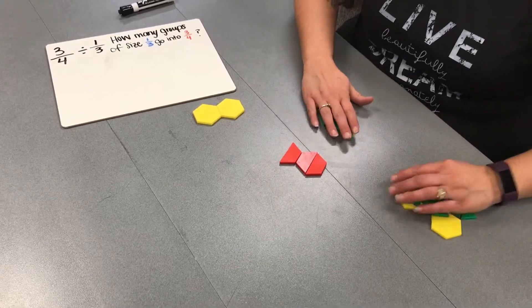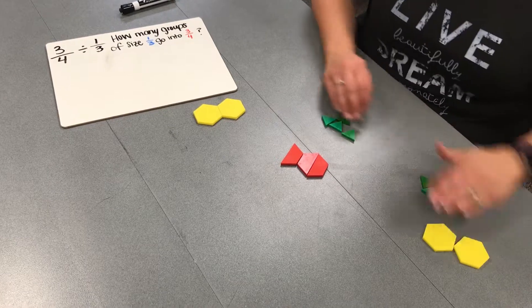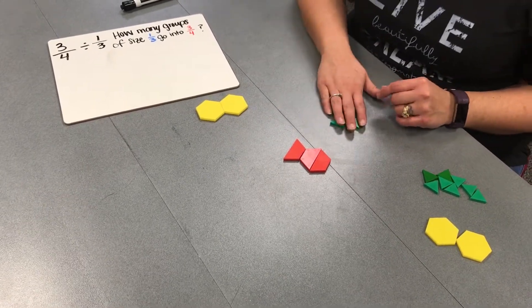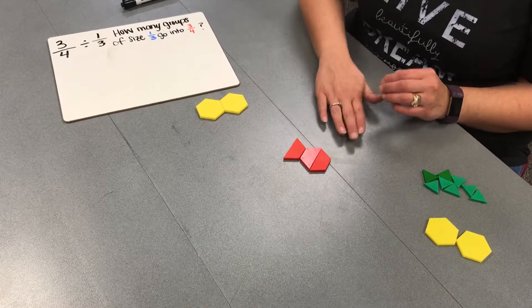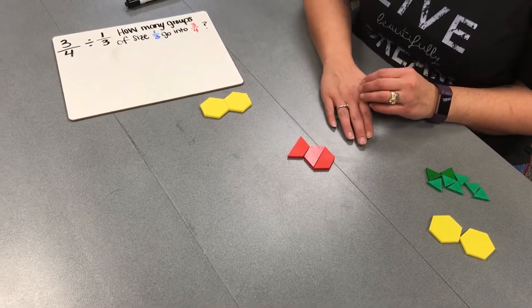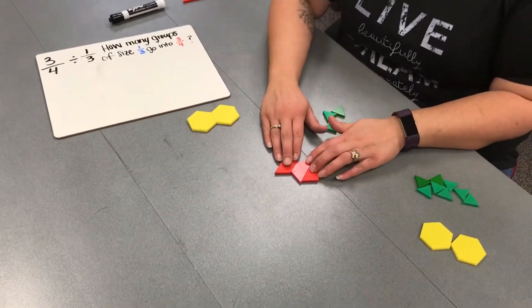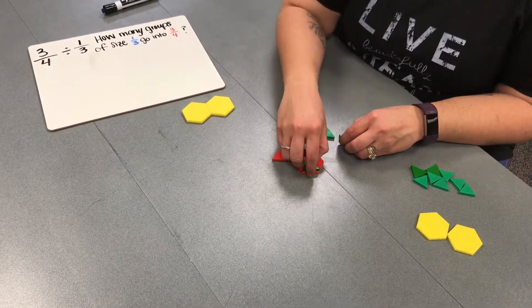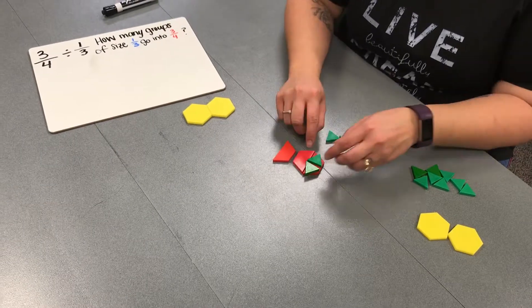So we're going to take these 4 triangles. Last, we need to determine how many groups of 1 third can fit into 3 fourths. So we can do that by placing the triangles on here.